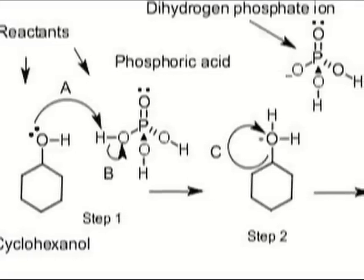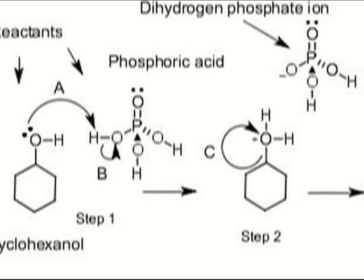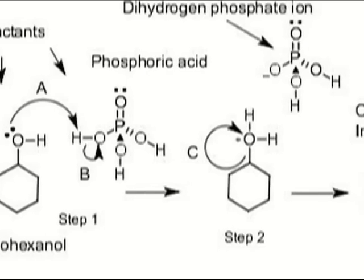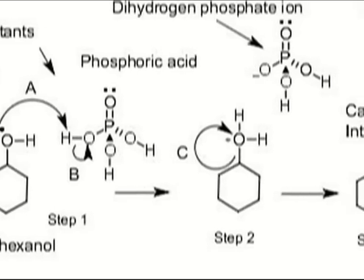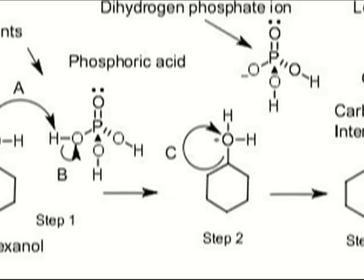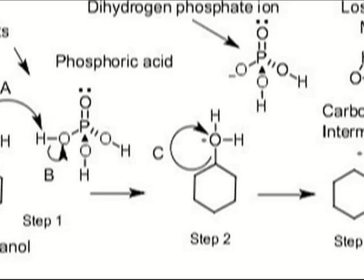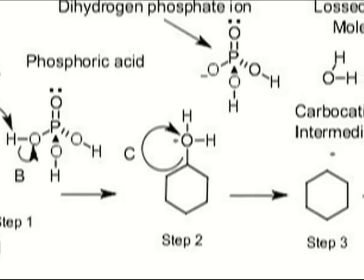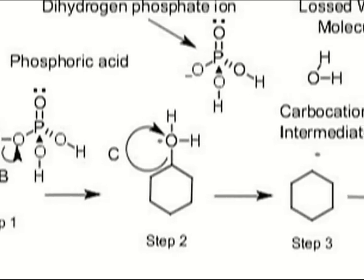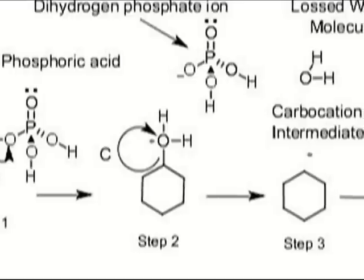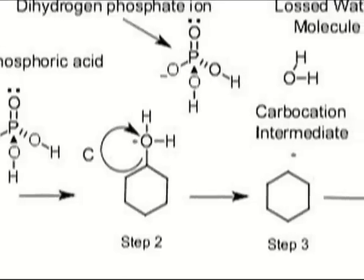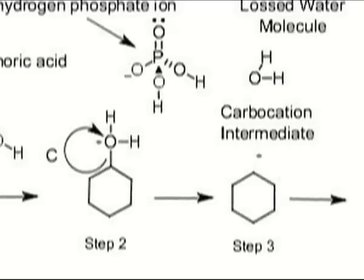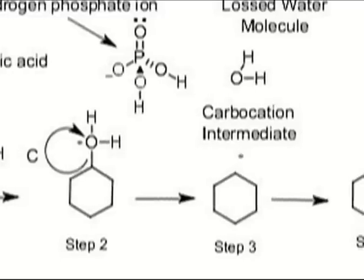Arrow A shows one of the lone pairs on the oxygen atom attacking a hydrogen on the phosphoric acid. Arrow B shows that the hydrogen atom left its electrons behind, forming the dihydrogen phosphate ion — the conjugate base of phosphoric acid — shown in step two. We can also see in step two the spontaneous loss of water. Arrow C shows us that the water took with it the electrons in the bond to form a neutral water molecule.